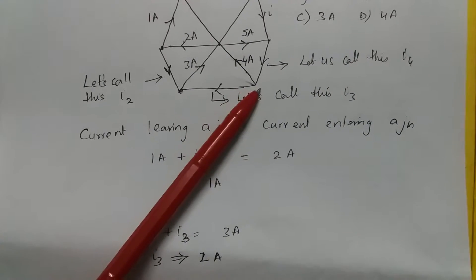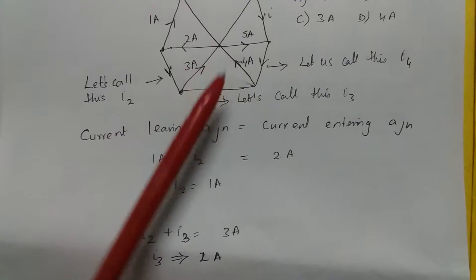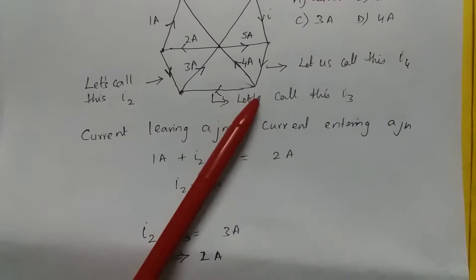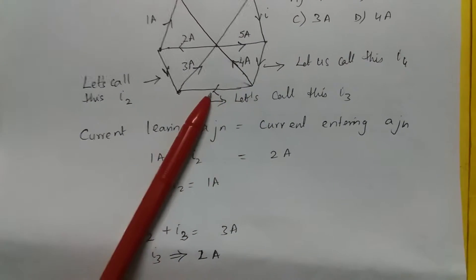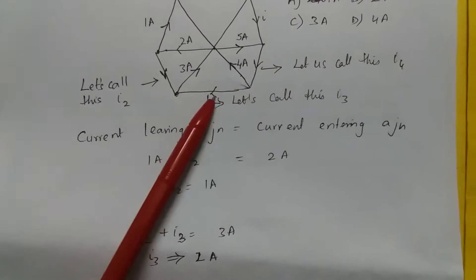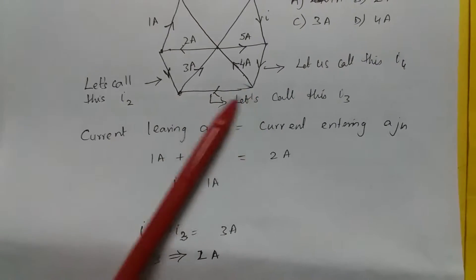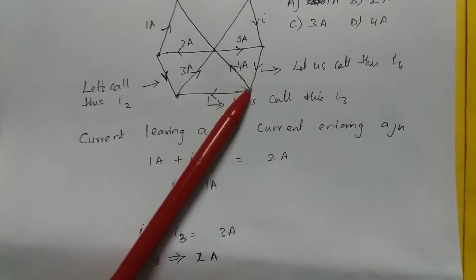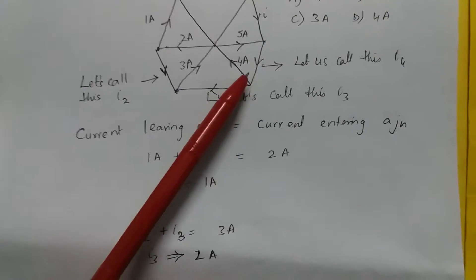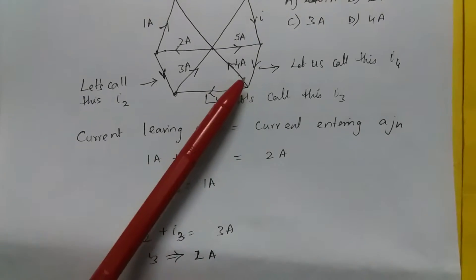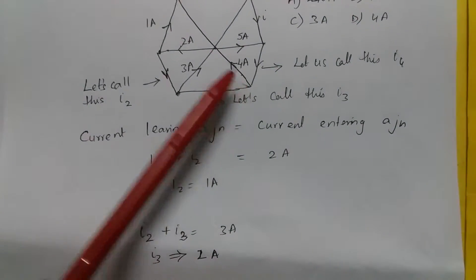4 amps is leaving and this value is 2, and this is also leaving. So what should this value be? It should be 6 amps. So I4 is 6 amps.